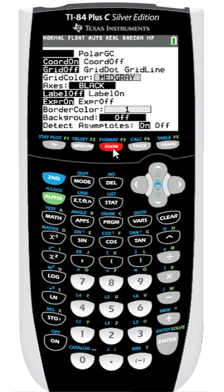At the top, you can set the graph to rectangular or polar grid coordinates. Below that, you can turn coordinates on or off. If I were to select off here, those coordinates below the graph we saw during the trace would disappear.